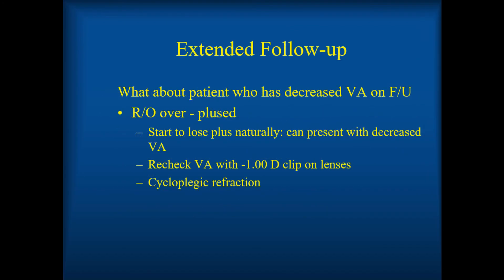What about the patient who has decreased vision on follow-up? You have to think right away about over-plus. As patients normally lose hyperopia with age, if the glasses they're wearing become too strong they won't wear them — they'll take them off or look over the top. Always ask parents if they're not wearing glasses well. Recheck vision with a minus-one clip-on lens and do a cycloplegic refraction to document over-plus so you can reduce the strength of the glasses.